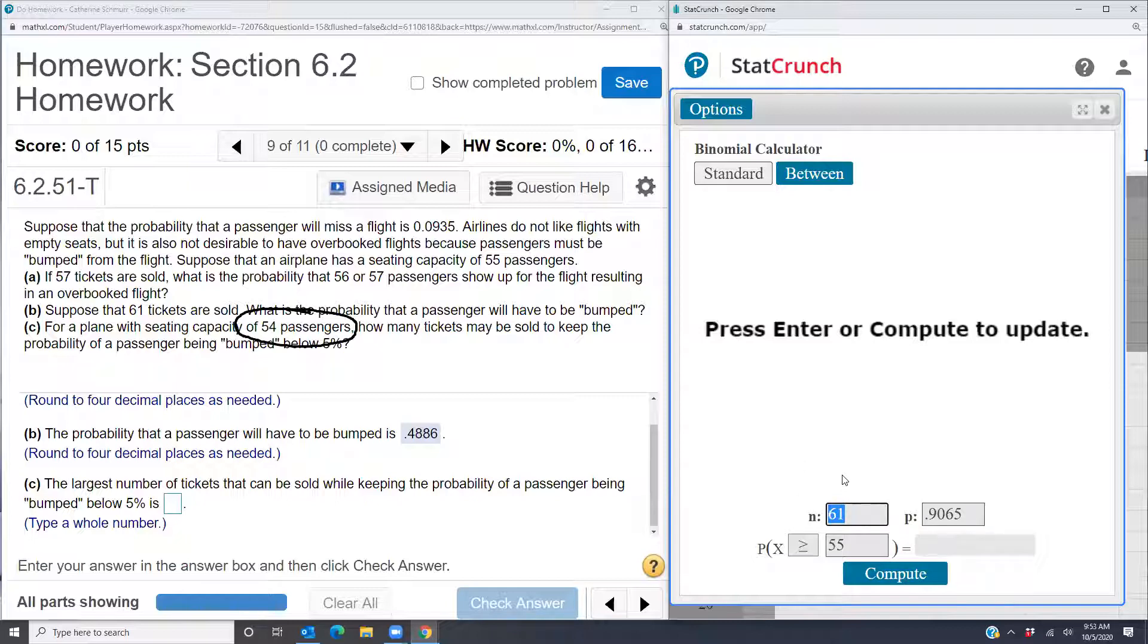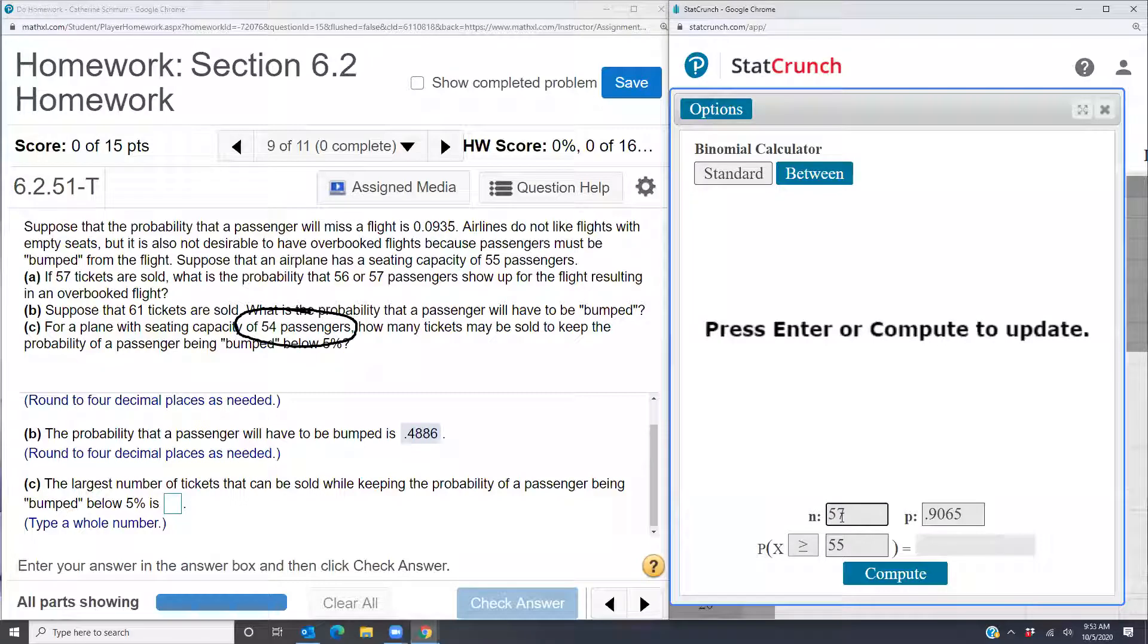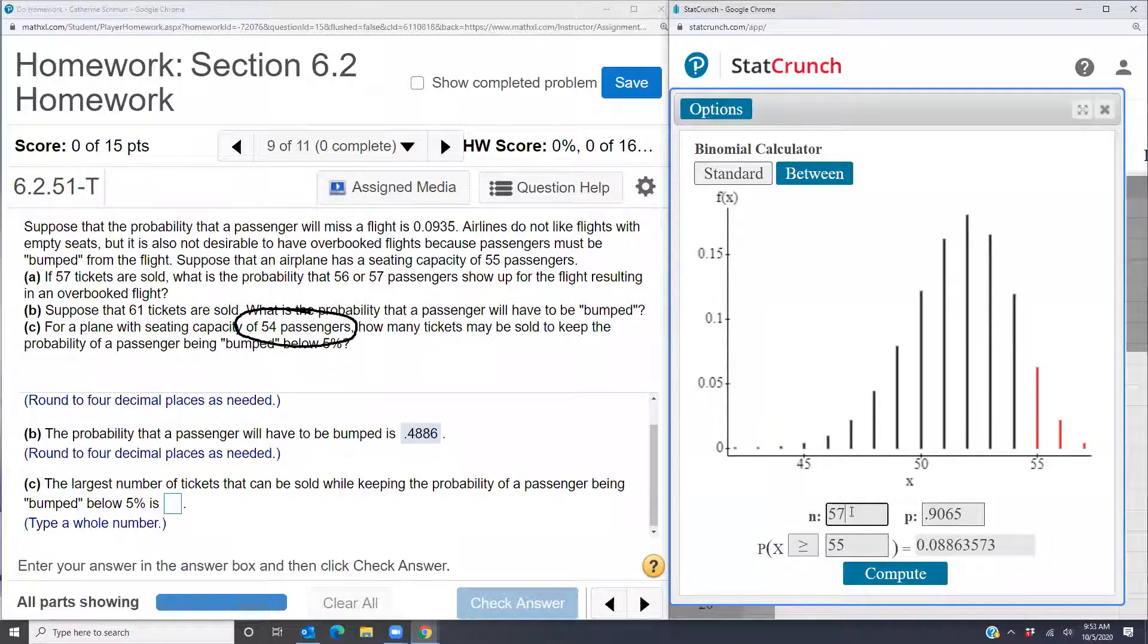So I'm going to try out, let me try out a 56. Okay, so that's below five percent. Let me see if 57 is still below five percent. Now when I change to 57 tickets sold, then now the probability that someone will have to be bumped is 0.0886, which is about 8.86 percent.